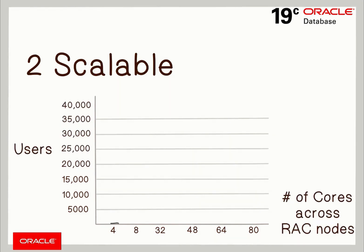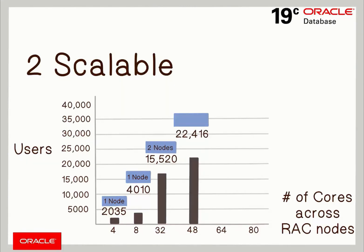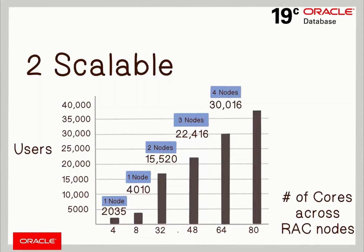This scalability is the result of a RAC component called CacheFusion. The graph below shows Oracle RAC scaling an SAP sales and distribution workload horizontally, starting with 4 cores running 2,000 users to 15,000 users over 32 cores on 2 nodes, to 30,000 users over 64 cores on a 4-node system without any changes to the application.